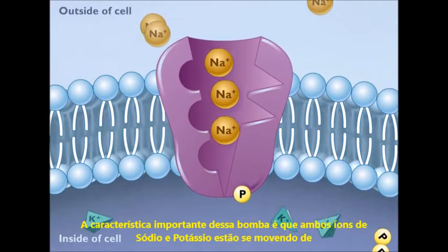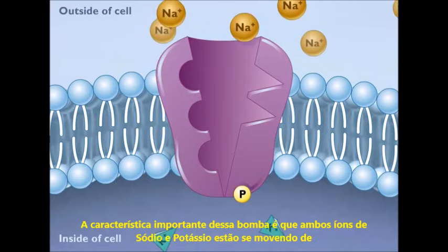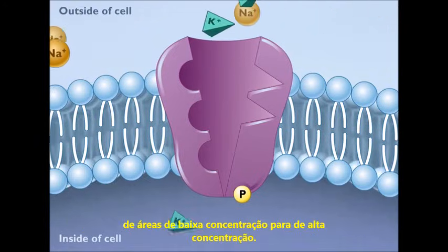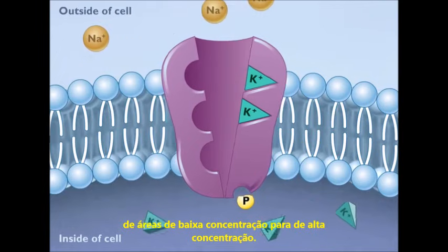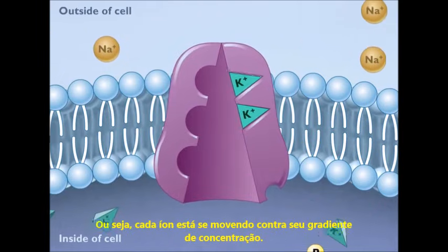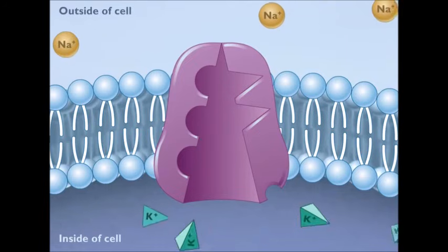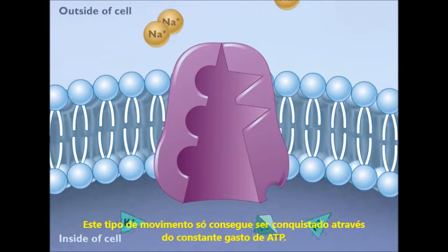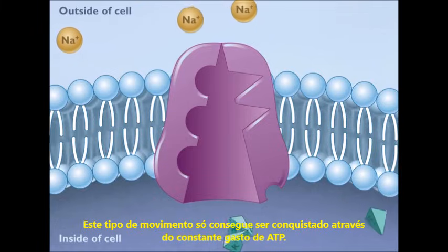The important characteristic of this pump is that both sodium and potassium ions are moving from areas of low concentration to areas of high concentration. That is to say, each ion is moving against its concentration gradient. This type of movement can only be achieved by the constant expenditure of ATP energy.